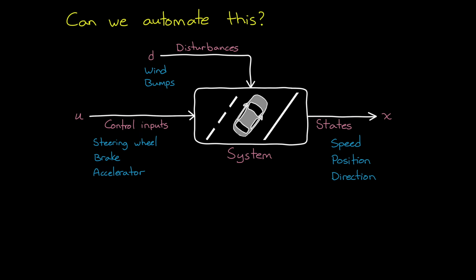Now, if we want to automate this process, that is, we want the car to drive without a person determining the inputs, where do we go from here? And the first question is, can an algorithm determine the necessary control inputs without constantly having to know the current state of the system?